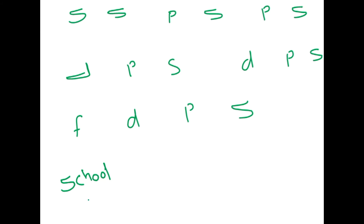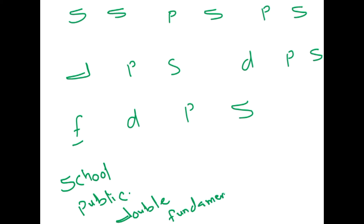We can use a mnemonic to remember this: for s we write 'school,' for p we write 'public,' for d we write 'double,' and for f we write 'fundamental.' So the full sequence becomes: school, school, public school, public school, double public school, double public school, fundamental double public school. Just remember this phrase to recall the orbital filling order.